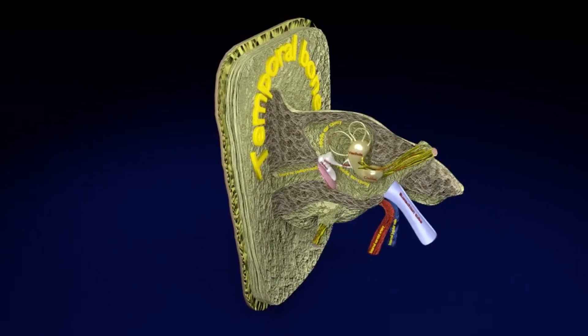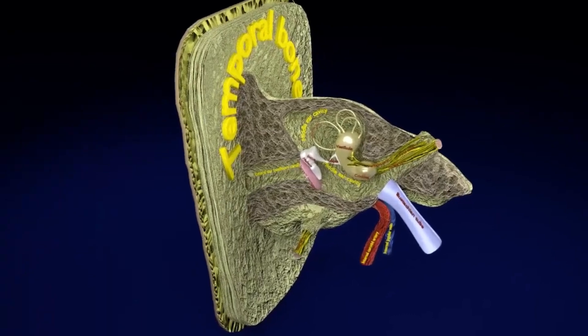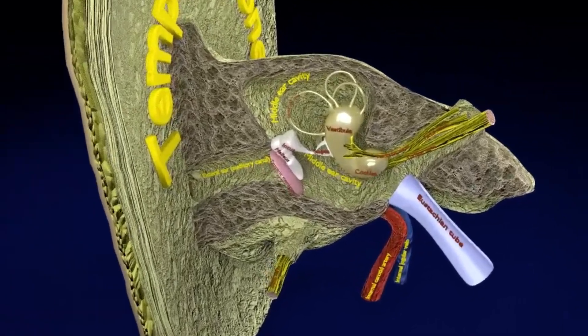The human ear has three parts: the external ear, the middle ear, and the inner ear.